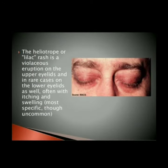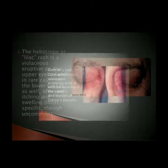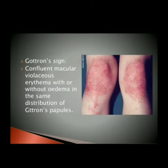The heliotrope rash is a violaceous eruption on the upper eyelids and, in rare cases, the lower eyelids as well, often with itching and swelling. Gottron's sign, though uncommon, is a confluent macular violaceous erythema with or without edema, occurring in the same distribution as Gottron's papules.